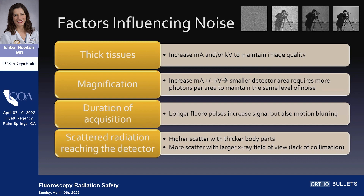Factors affecting noise are thick tissues, magnification — because you're having to drive these photons through a smaller area — and the duration of acquisition. Longer fluoroscopy pulses or longer acquisition times are going to have higher noise if there's motion blurring. And then scattered radiation: if it bounces off of you and hits the detector, those are nonsense photons that add more noise.